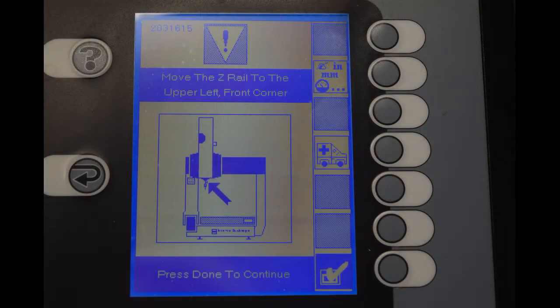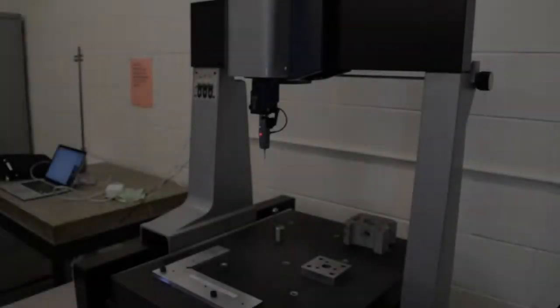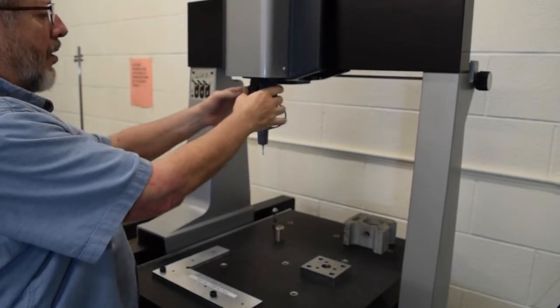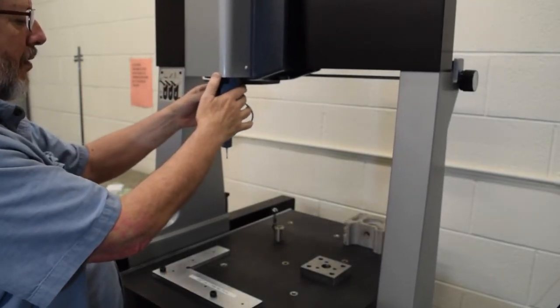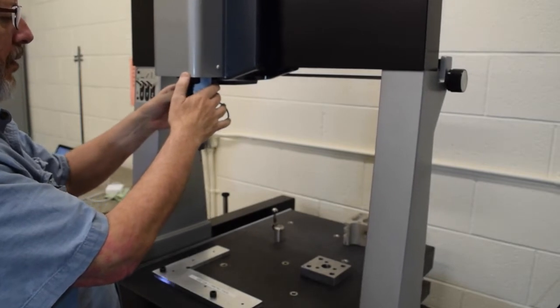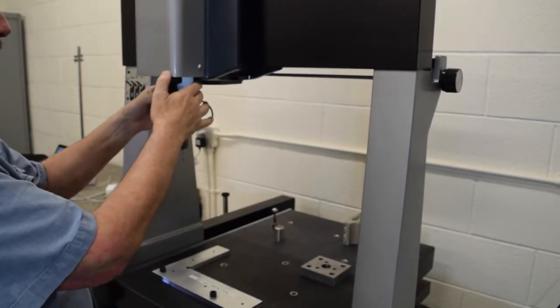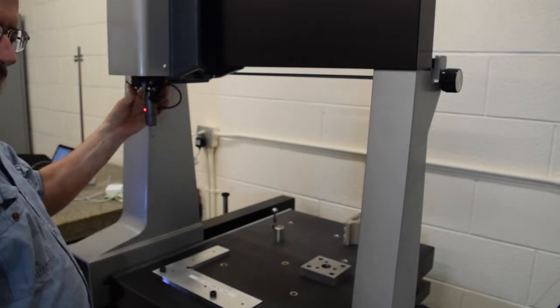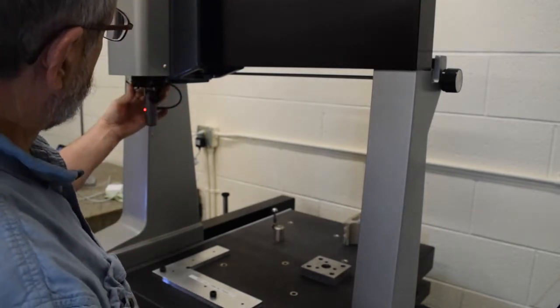Once the machine is on, we need to set the machine origin. We do that by moving the head to the top front left corner of the machine. First unlock all three axes. Move the head up gently and all the way to its limits. Then when it's all in place, we'll press the checkbox on the console switch.